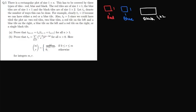t(n) denotes the number of ways in which we can cover this plot of size 1×n using these tiles. The first question is: prove that t(2n+1) equals t(n)·t(n-1) + t(n+1).